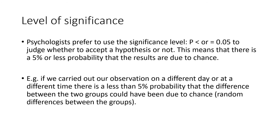Now we need to look at the correct level of significance. Psychologists prefer to use the significance level p is less than or equal to 0.05 to judge whether to accept a hypothesis or not. This means that there's a 5% or less probability that the results are due to chance. For example, if we carried out our observation on a different day or at a different time, there's a less than 5% probability that the difference between the two groups could have been due to chance or random differences between the groups.